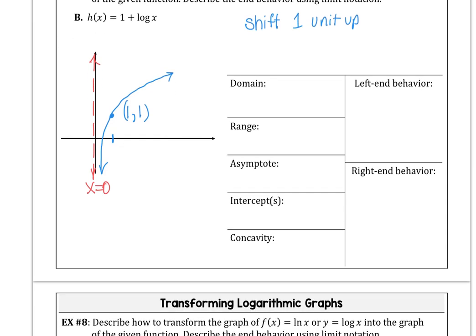When is 1 plus log x equal to 0? Well, that would happen when log x is negative 1. So x is 10 to the negative 1, which is 1 tenth.